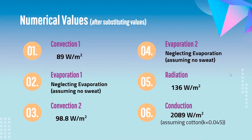After studying all possible heat transfer modes and substituting values of all constants and assumptions, we get the following numerical values. Convective heat transfer between skin and clothes is 89 W/m. Evaporation is neglected due to the assumption of negligible sweat. Convective heat transfer between the outer layer of clothes and surroundings is 98.9 W/m. Radiation heat transfer is 136 W/m. The dominant mode is conduction — assuming cotton fabric with thermal conductivity of 0.045 W/(m·K), giving conductive heat transfer of 200 W/m.